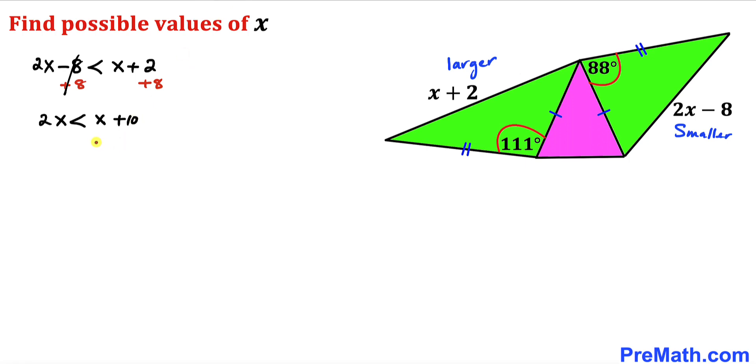Now let's go ahead and subtract x from both sides. We can see that this cancels out. So we got x is less than 10, and that's one of our inequalities.